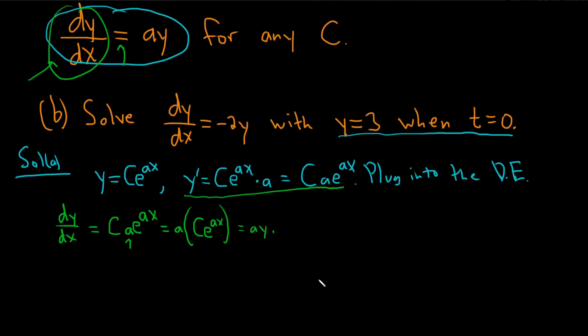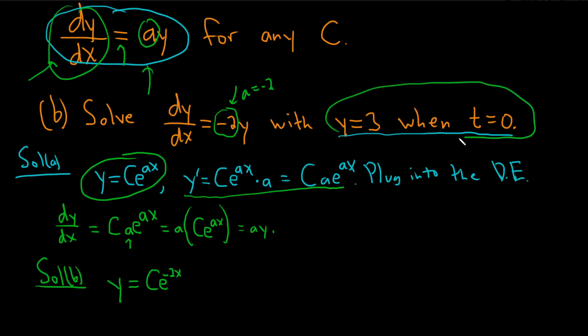Part b, so solution to b. So solve this with y equals 3 and t equals 0. So basically, we know that whenever we have this DE up here, this is the solution. So when we have this one, look, a is negative 2. So we know that y equals ce to the negative 2x. We know that already just from using part a, from using matching. We know that in this problem, a is negative 2. Therefore, our solution should be this.